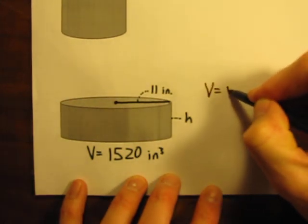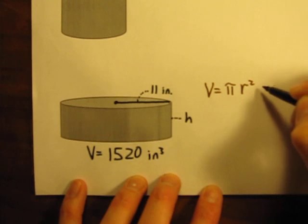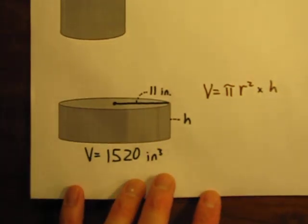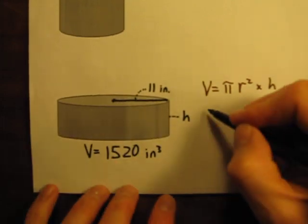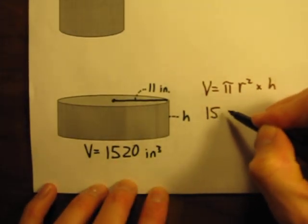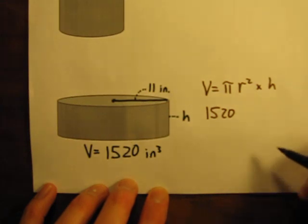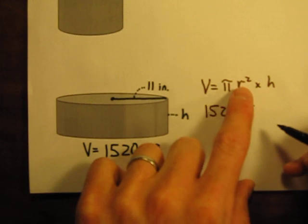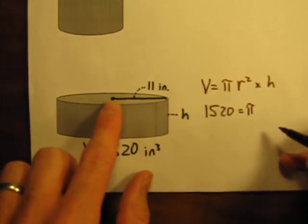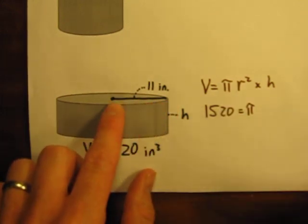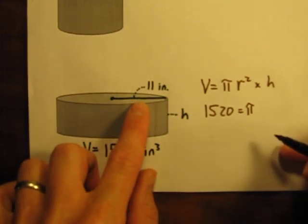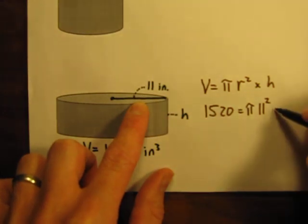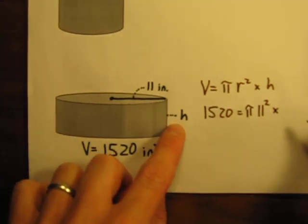Volume is equal to pi times the radius squared times the height. And let's plug in the numbers that we know. The volume is 1520 is equal to pi. What's the radius? The radius is here. Again, make sure they're not giving you the diameter. In this case, it is actually telling us what the radius is. The radius is 11 squared times the height.